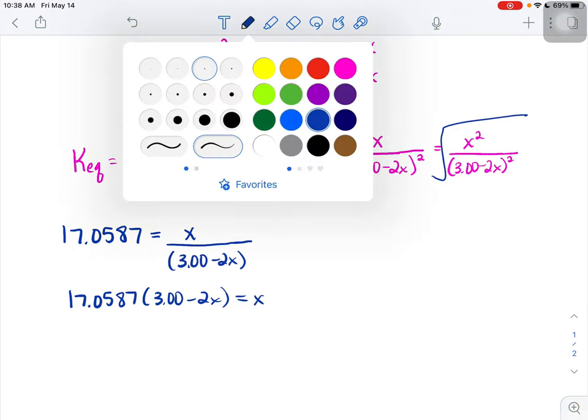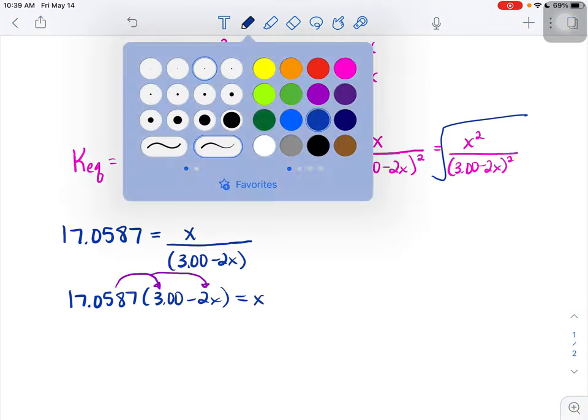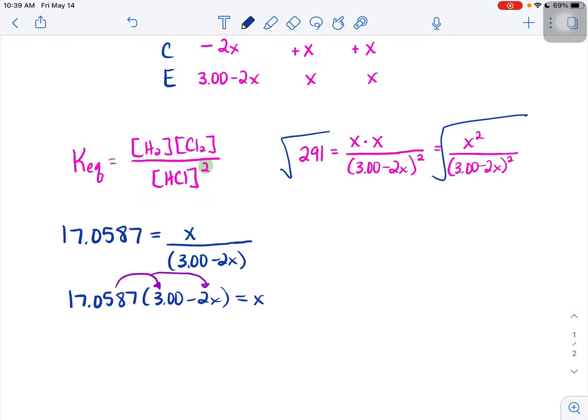Once you get this far, you have to distribute it, that 17 number to both parts of that problem. So that 17 number times 3, I'm going to get something approximately 51.1761, minus 34.1174x.